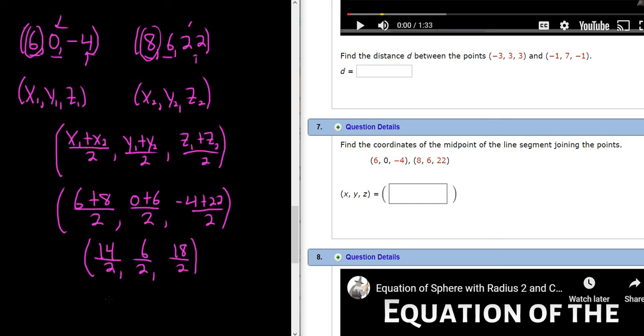I'm going kind of fast here. 14 over 2 is 7, 6 over 2 is 3, 18 over 2 is 9. And that would be the midpoint of the line segment joining these two points.